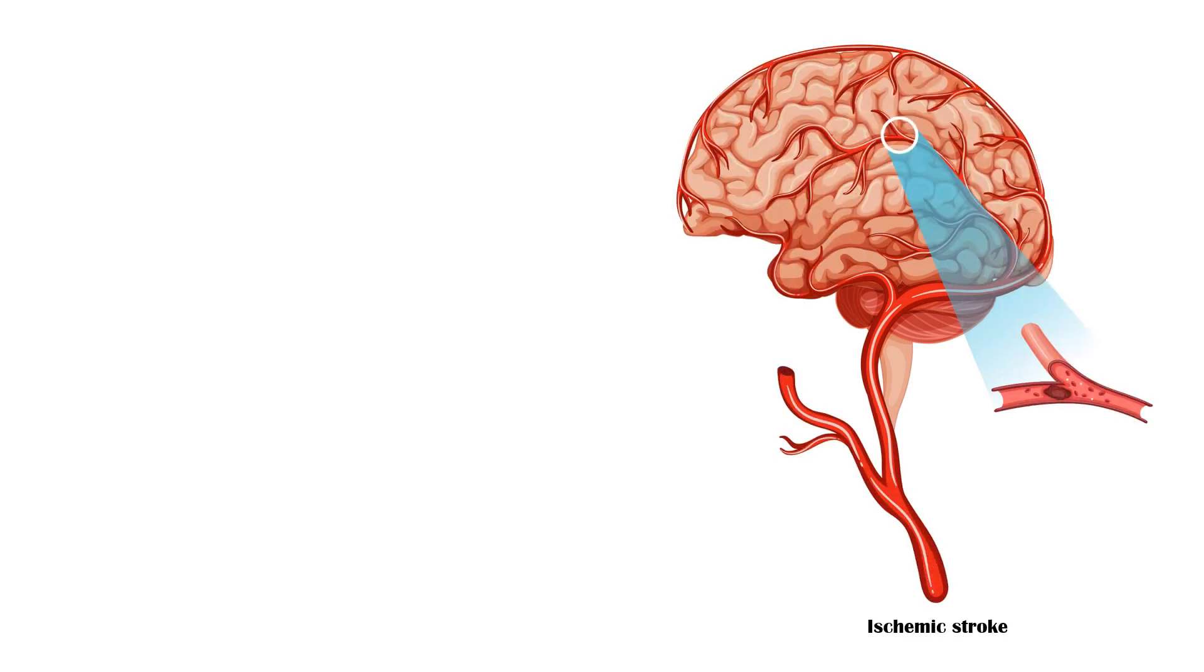Ischemic stroke, which occurs due to blood vessel obstruction, accounts for about 85% of all cases of stroke. Obstruction can occur due to thrombosis or formation of blood clots in the vasculature, large artery stenosis, and small vessel disease.